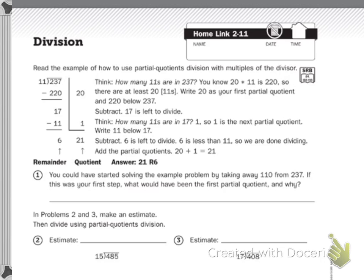You could have started solving the example problem by taking away 110 from 237. If this was your first step, what would your first partial quotient have been and why? Anyway, so this is one way to do division.